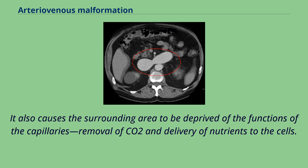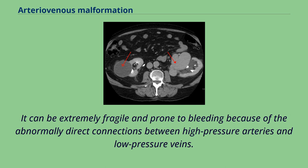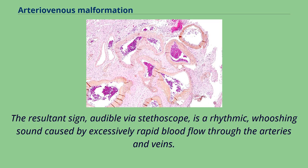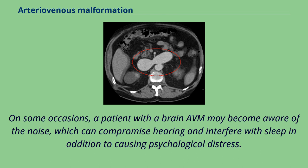It also causes the surrounding area to be deprived of the functions of the capillaries — removal of CO2 and delivery of nutrients to the cells. The resulting tangle of blood vessels, often called a nidus, has no capillaries. It can be extremely fragile and prone to bleeding because of the abnormally direct connections between high-pressure arteries and low-pressure veins. The resultant sign, audible via stethoscope, is a rhythmic, whooshing sound caused by excessively rapid blood flow through the arteries and veins. It has been given the term bruit, French for noise. On some occasions, a patient with a brain AVM may become aware of the noise, which can compromise hearing and interfere with sleep in addition to causing psychological distress.